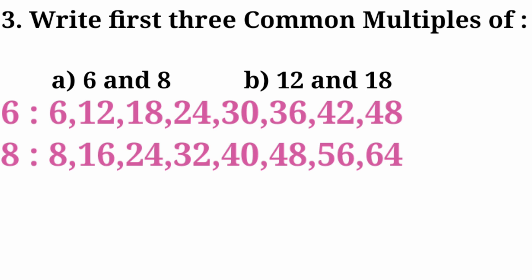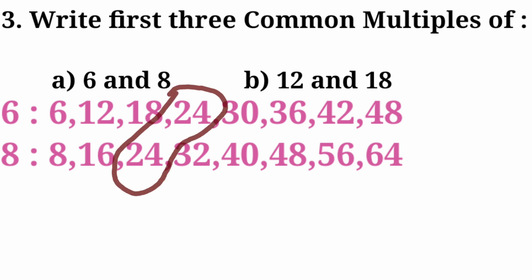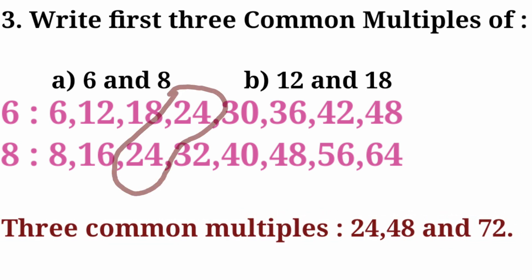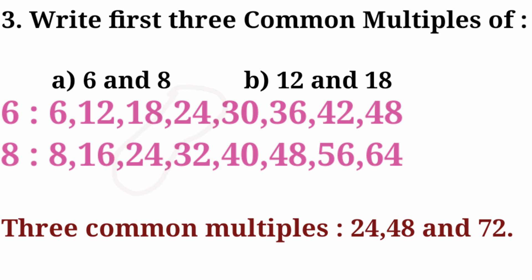Here is a shortcut: once you find the first common multiple — which is 24 — simply multiply it by 2, 3, 4, etc. to get further common multiples. So 24×1 = 24, 24×2 = 48, 24×3 = 72. These are the first three common multiples of 6 and 8. This shortcut lets you find any number of common multiples easily.